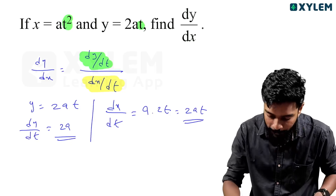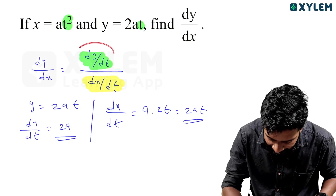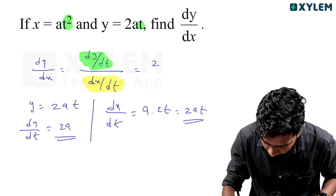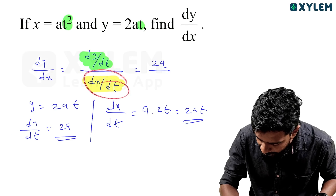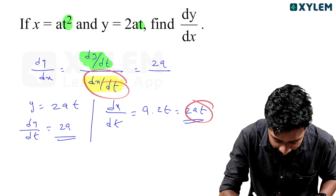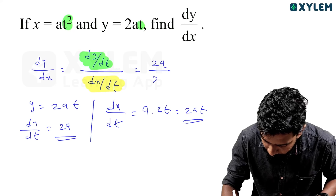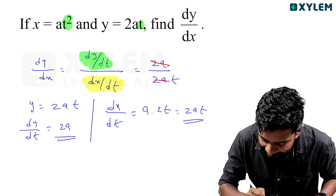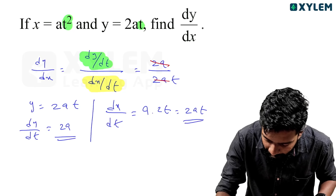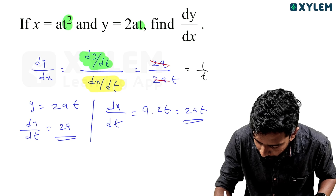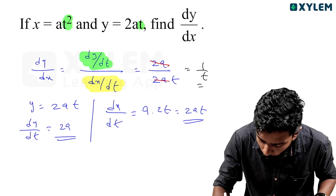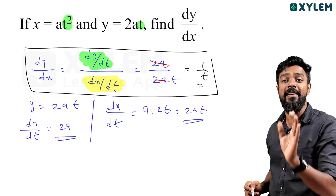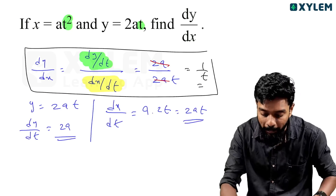Now substituting: dy by dt equals 2a and dx by dt equals 2at. The 2a cancels, leaving 1 by t. So dy by dx equals 1 by t.